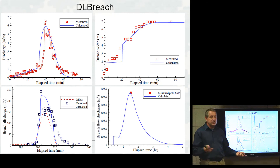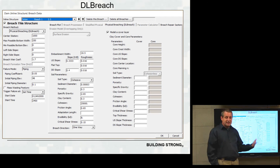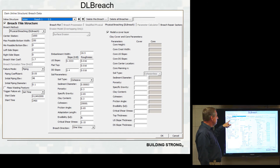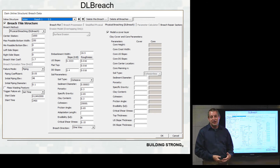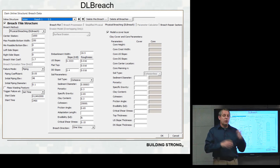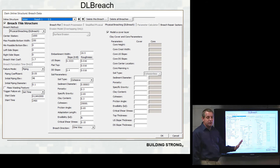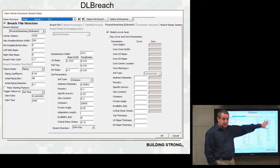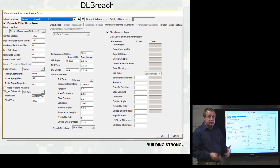In RAS 6.0 you have an additional tab called physical breaching. If you choose physical breaching under breach method, you'll get what sometimes looks like empty-box overload — many parameters to define. But it's actually not that bad: most of these parameters you already have, or a geotechnical engineer can help you estimate quickly. Most of them are associated with the core of a composite structure, which is powerful because if you base it only on external material you won't get it right.